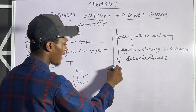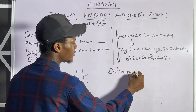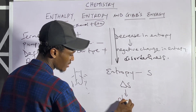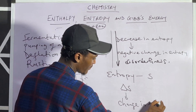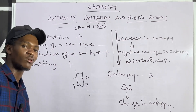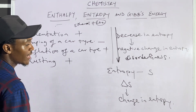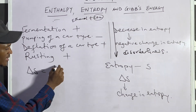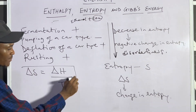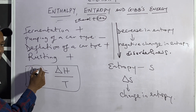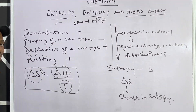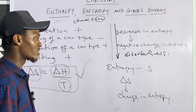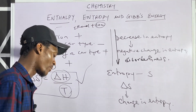The word entropy is denoted with the letter S. So when you have delta S, it means change in entropy. Sometimes you might be told to calculate the entropy of a reaction. The change in entropy can be calculated when you know your value of entropy and temperature using the formula: change in entropy equals change in entropy over temperature.